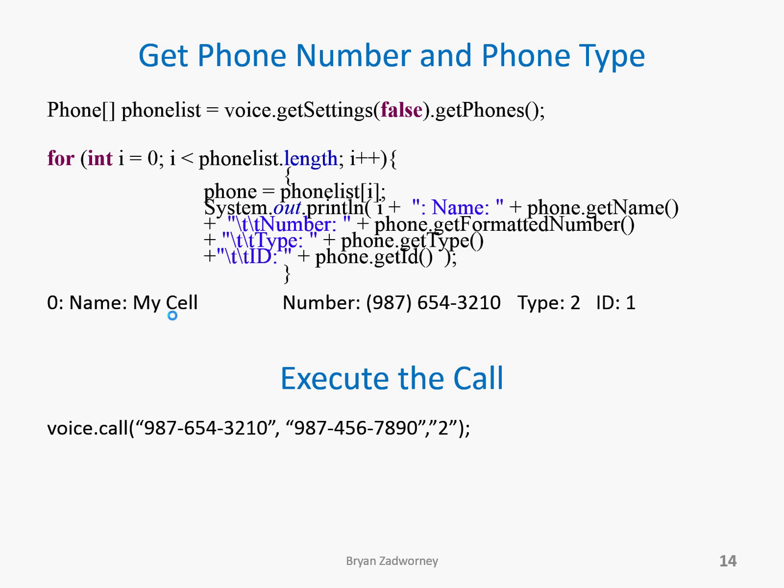I can then execute the call with the information I have. You do voice.call, enter the phone number from your account, enter the phone number you intend to call, and then the type associated with the phone number from your account. So 987-654-3210 is a phone number associated with my account, 987-456-7890 is the phone number I'm trying to call, and 2 is the type of phone associated with 987-654-3210. When I execute this code, first my phone — the one associated with 654-3210 — will ring. About 10 seconds after that, 987-456-7890 will ring. So be ready to answer your phone quickly. When you answer, it'll be just like you made a phone call yourself — they won't even be able to tell it came from Google Voice, except maybe the phone number that comes up.